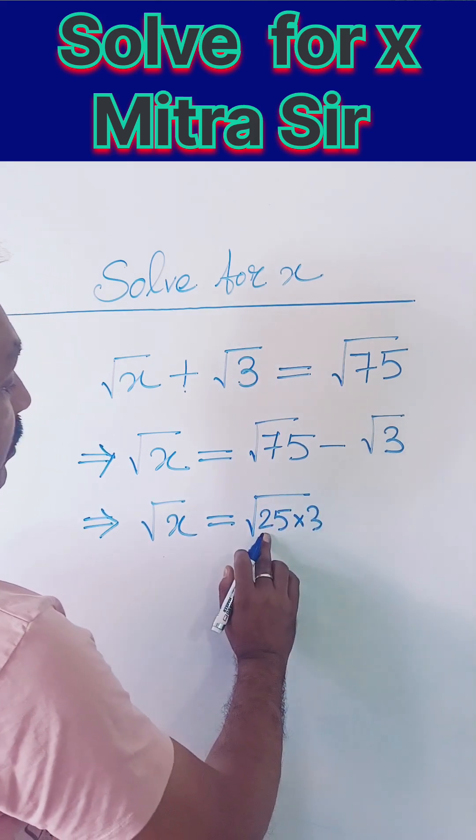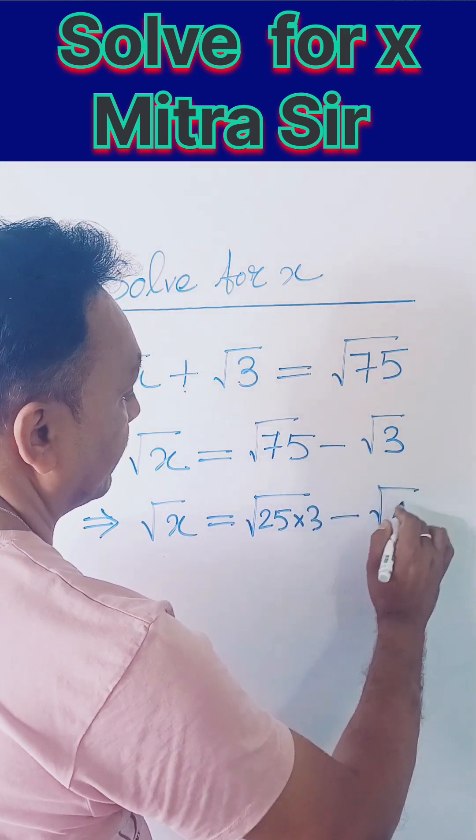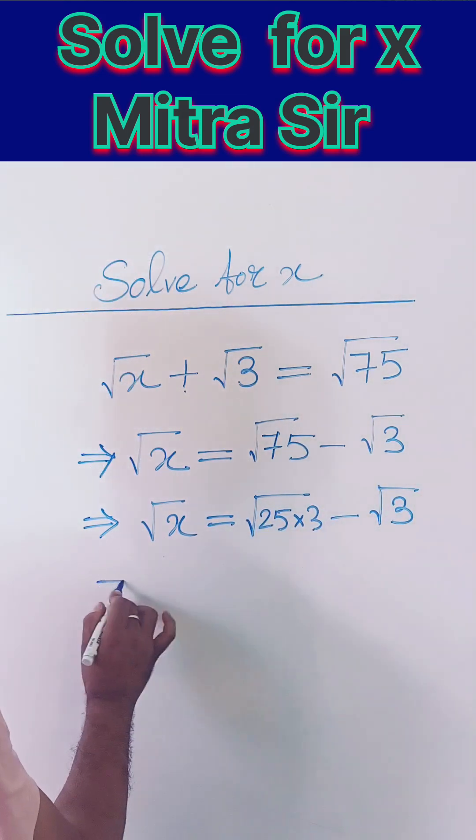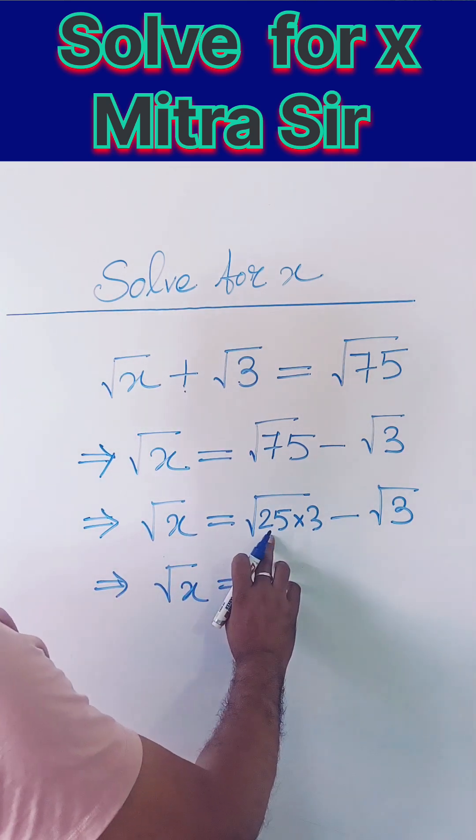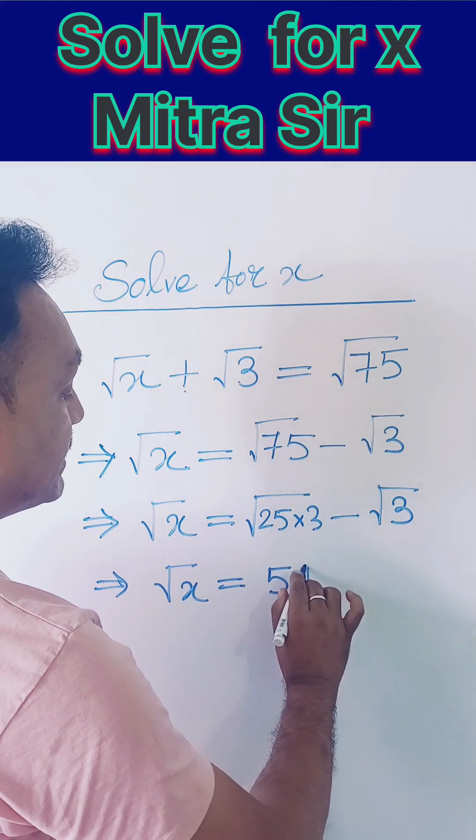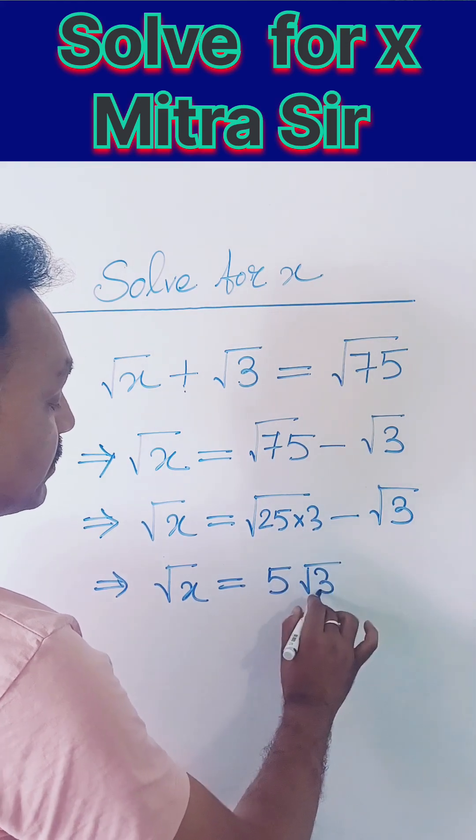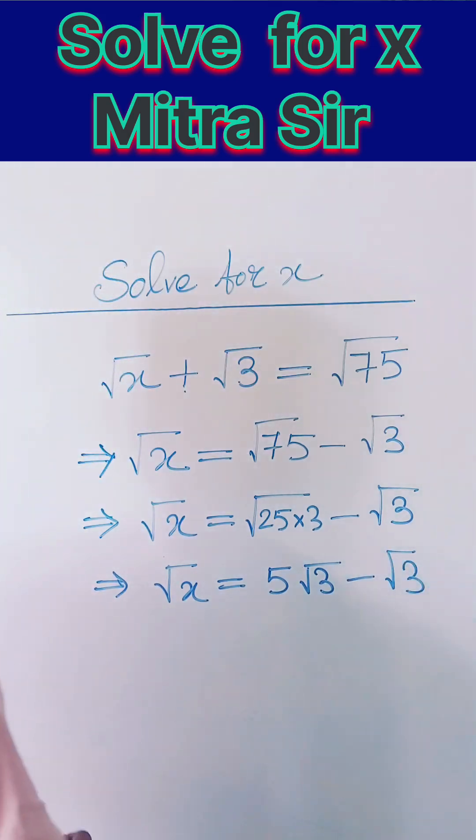Now what we need to do is express 75 in terms of 25 times 3. We can write it as √(25×3). In the next step, the square root of 25 gives you 5.